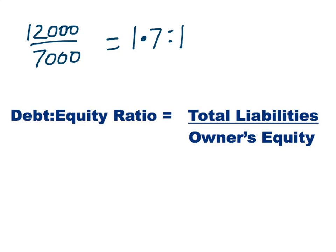What this means is that for every $1 of money put into the business by the owners — every dollar of equity — they have borrowed $1.70. There isn't really a benchmark for what is a good level of gearing, and it's not a problem for businesses to use debt, as long as the business is able to pay back those debts and is using that debt to generate income.